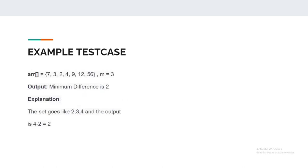Let's say we have the array [7, 3, 2, 4, 9, 12, 56] and m equals 3, meaning there are 3 students. So n is 7 and m is 3. Out of these 7 packets we need to give 3 students one packet each such that the difference between the maximum and minimum chocolates is minimum.